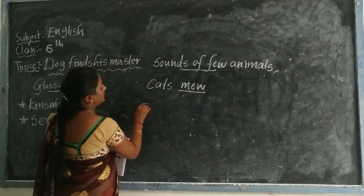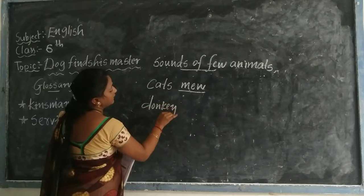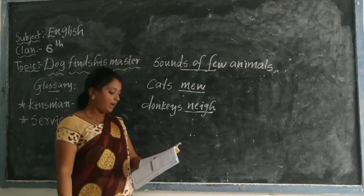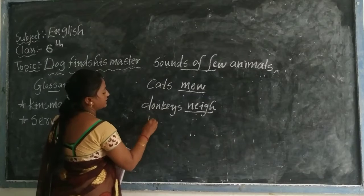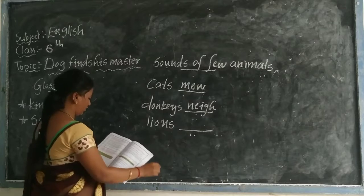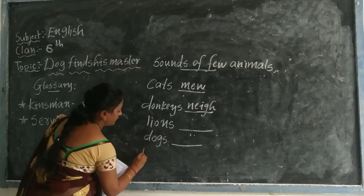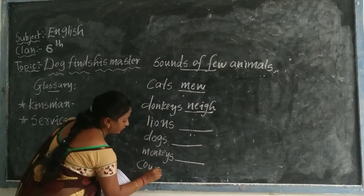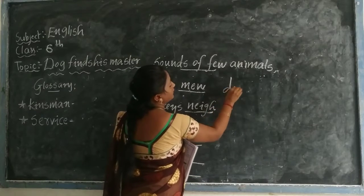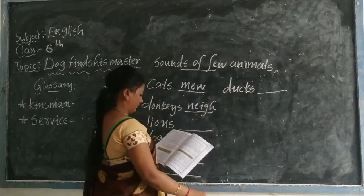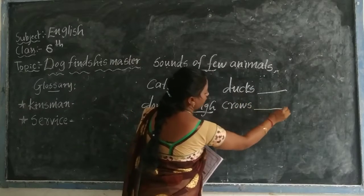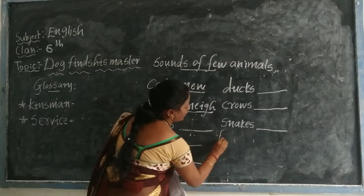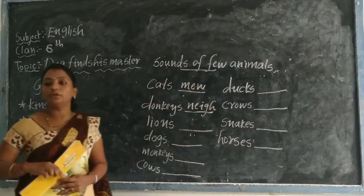Then one more — donkeys. What sound do donkeys make? Then lions — what sound do lions make? Then dogs. Then monkeys. Then cows. Then ducks. Then horses. You have to write the answers in a separate notebook. This is homework for you. You have to write the sounds for each of these animals.